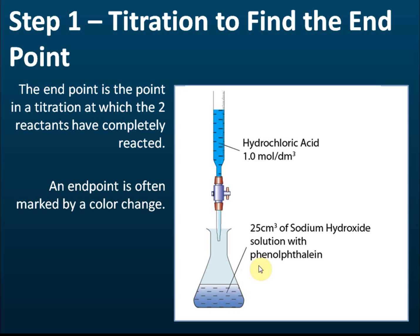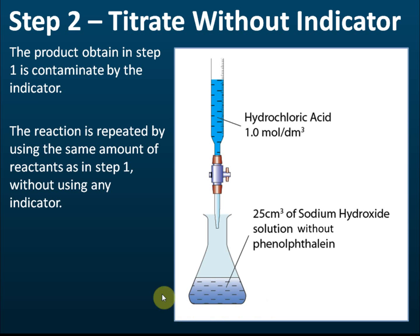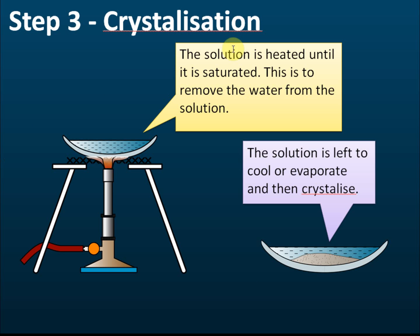However, we still have phenolphthalein indicator in the products, and this is an impurity we don't want in our salt. We cannot remove the phenolphthalein because it is a solution — it is very hard to remove one solution from another. So we need another approach to get a pure salt solution. Once we have the pure salt solution, the next step is to remove water through crystallization.